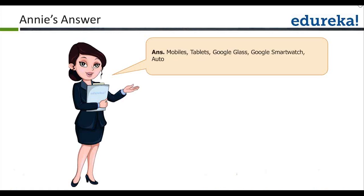What are all target platforms on which Android runs? Android can run on mobiles, tablets, Google Glass, Google Smartwatch, and now Google has also released an Android version for Autos. The equipment in four-wheelers — like music systems and GPS — can run the Android version. When I started with Android in 2010 it was just limited to mobiles, but now Android has spread into many areas.